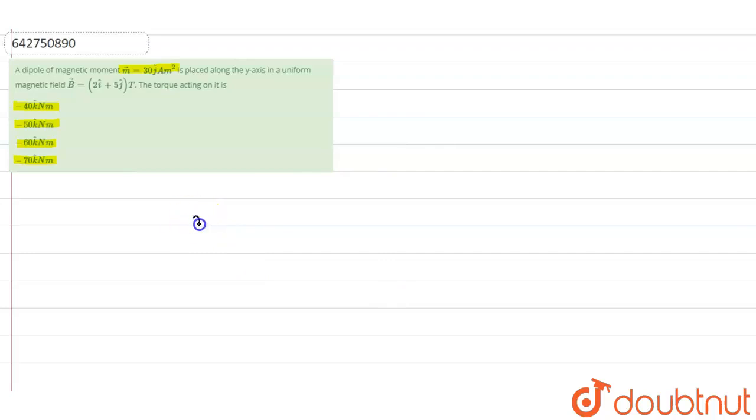Our magnetic moment has been given as 30 j cap ampere meter square. Our magnetic field B has been given as 2 i cap plus 5 j cap tesla.